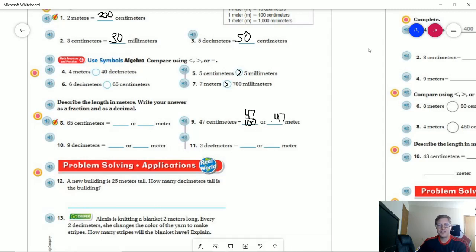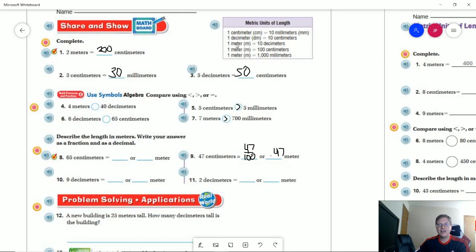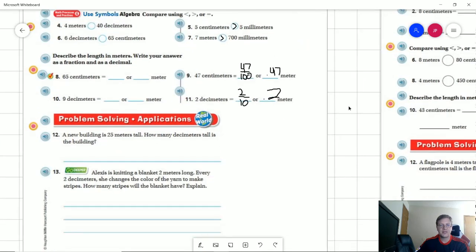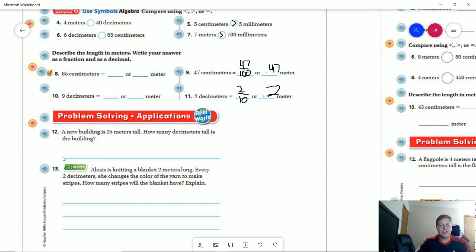Decimeters. So if we have one meter being worth 10 decimeters, we are going to be working with each decimeter being 1 tenth of a meter. So two of those, we would have a fraction that would be 2 over 10. And then our decimal value for that would be 0.2.